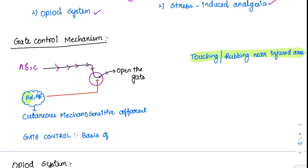The A-alpha and A-beta fibres are relatively larger fibres. These larger fibres take the same tract and block the pain pathway because their sensation becomes predominant — you feel touch rather than pain in the surrounding area. This is why it blocks the gate, which is why it is called the gate control mechanism.